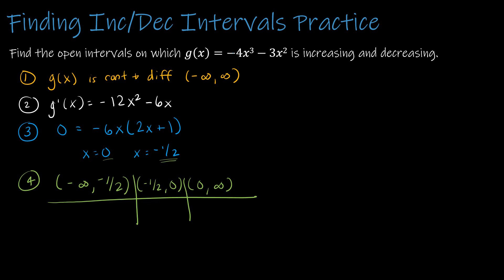Testing intervals: for negative infinity to negative one half, plug in negative 1 — that gives a negative value. For negative one half to 0, plug in negative one fourth — that gives a negative value plus a larger positive value, so positive. For 0 to infinity, plug in 1 — that gives a negative minus another negative, which is negative. So the function decreases from negative infinity to negative one half, increases from negative one half to 0, then decreases again after 0.